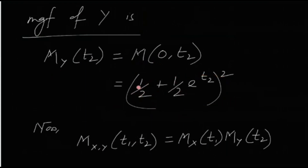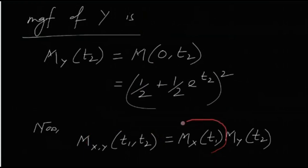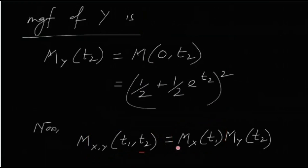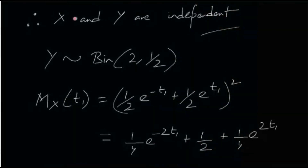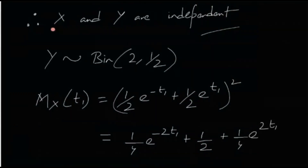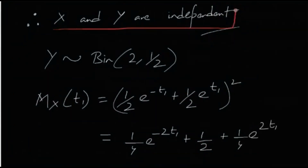Now you can see that the joint MGF is actually the product of the individual MGFs: M_{XY}(t1, t2) = M_X(t1) · M_Y(t2). This means X and Y are actually independent.